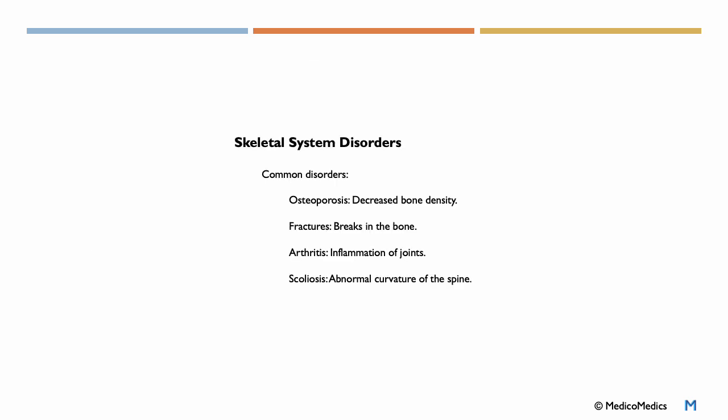Let's briefly mention some examples of skeletal system disorders. Common disorders include osteoporosis, where we have decreased bone density. We have fractures, very common, where there are breaks in the bone. Another common thing is arthritis, where we have inflammation of joints. We have scoliosis, which is abnormal curvature of the spine.